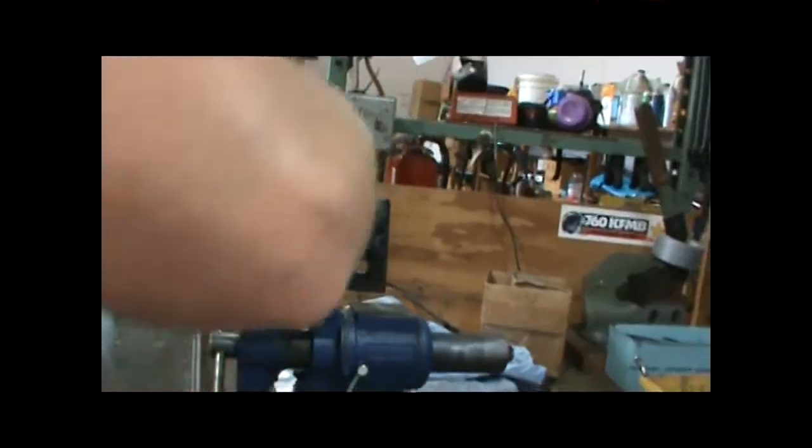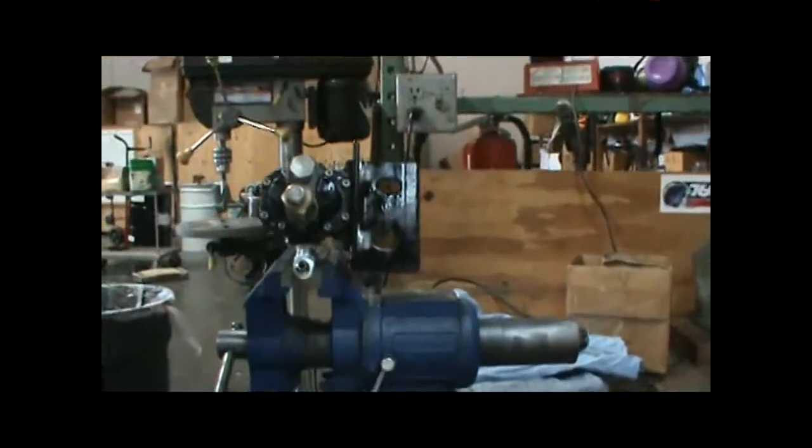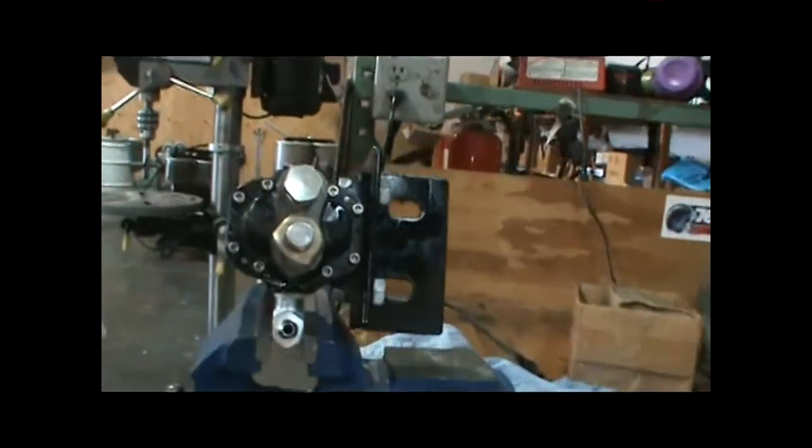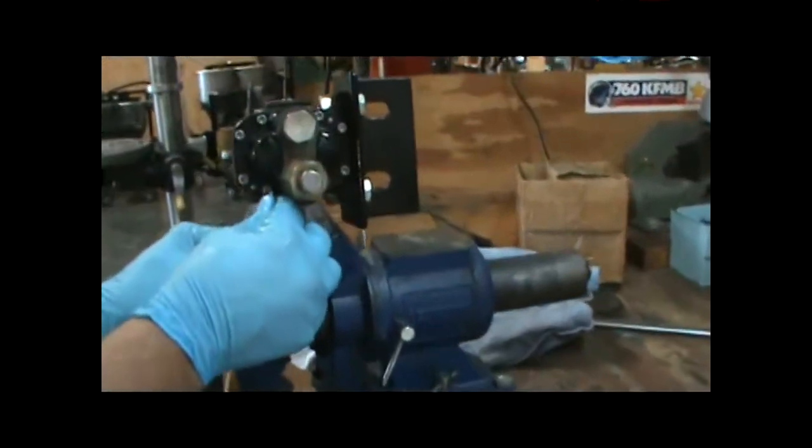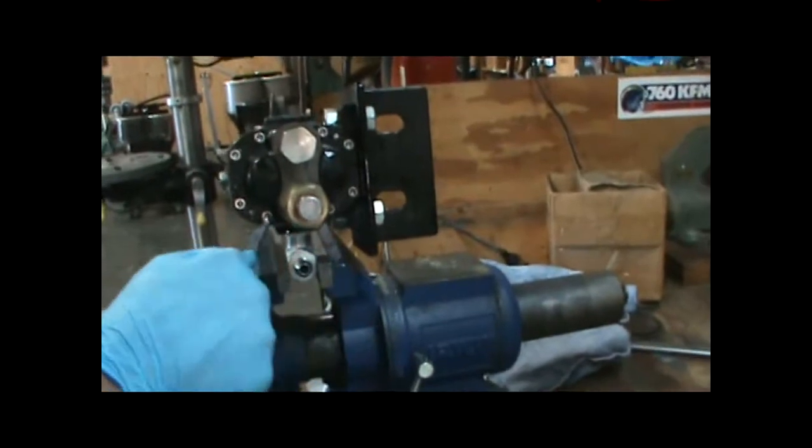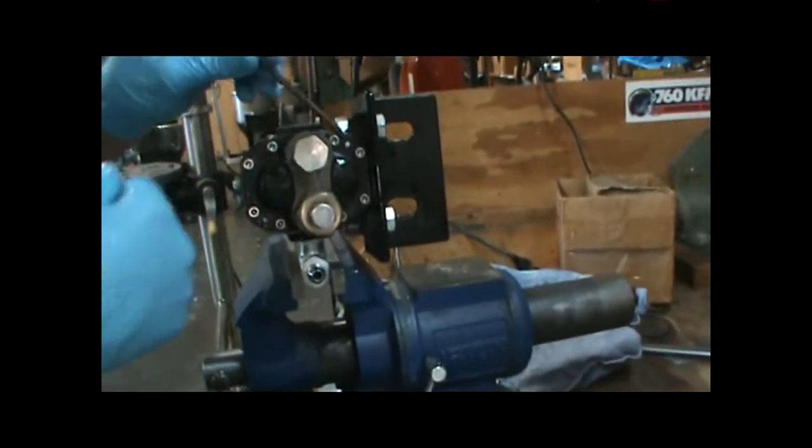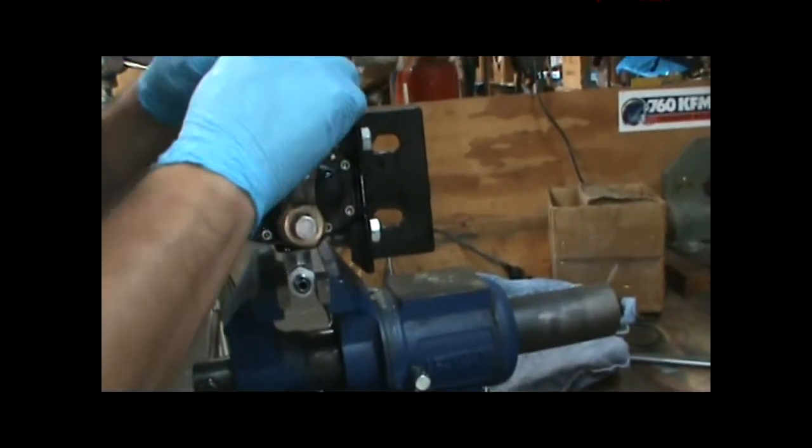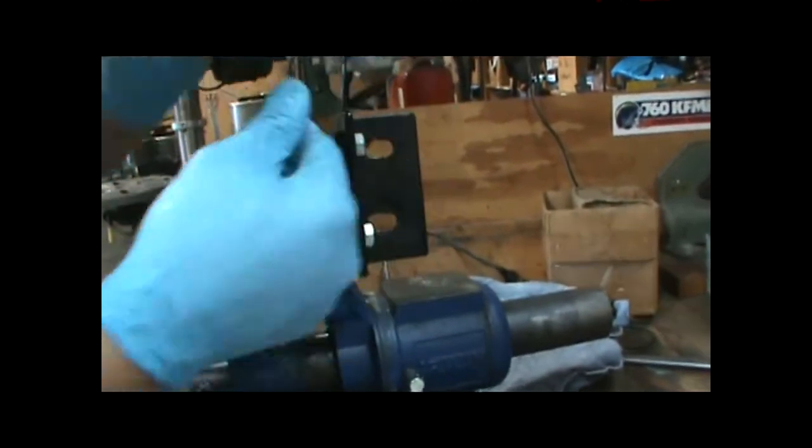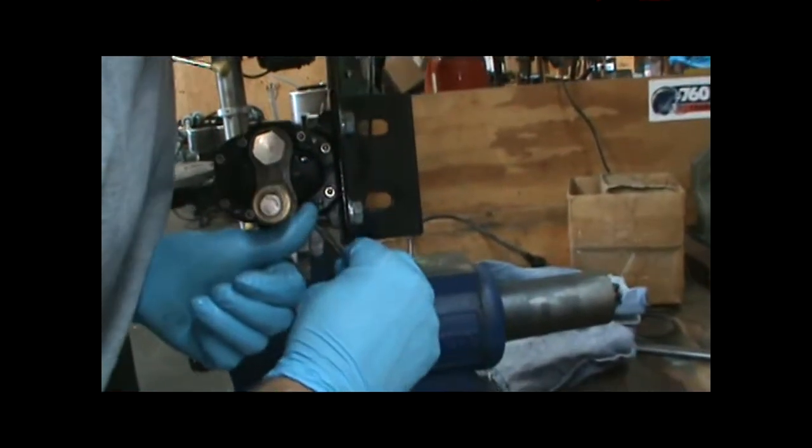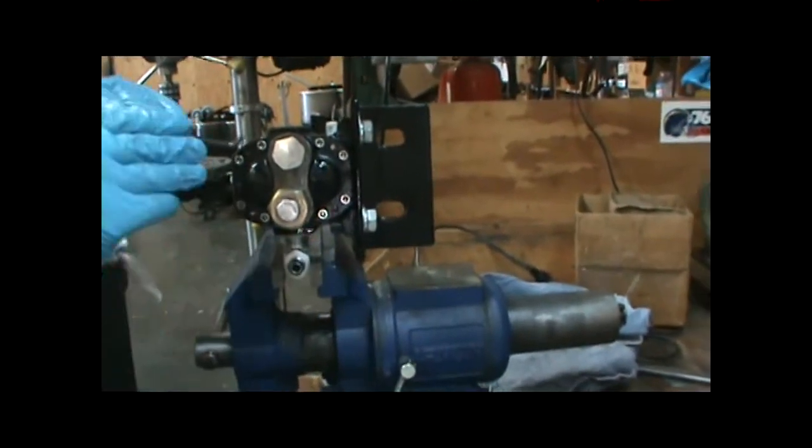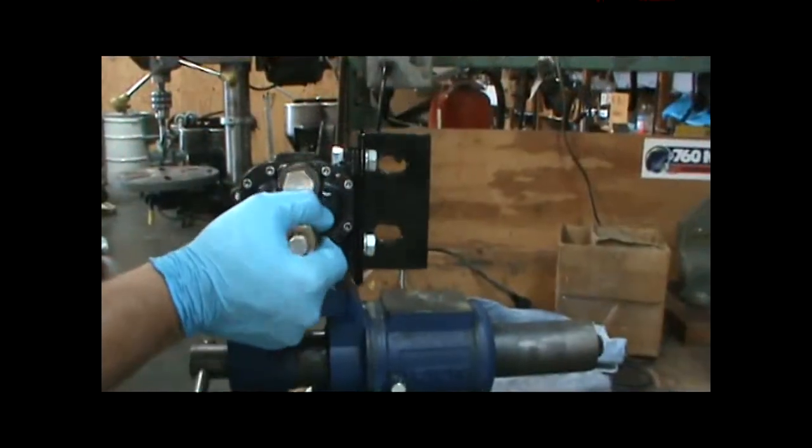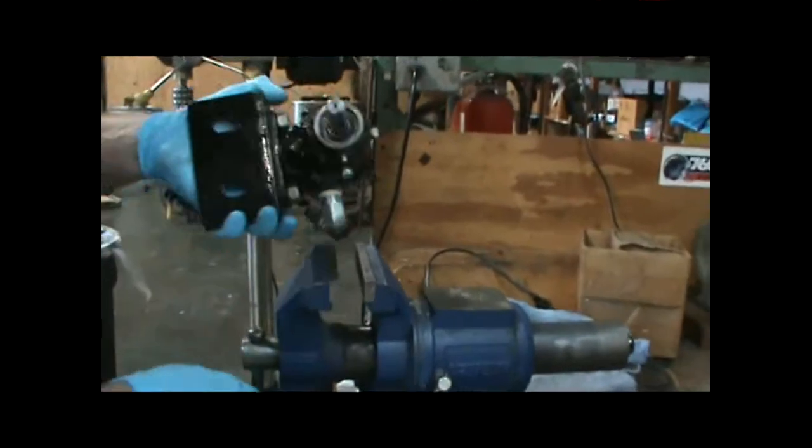After snugging up all of our eight allen bolts here, making sure you go in a star pattern, I'm gonna snug them up to about five pounds with the allen wrench. Go in a star pattern just like tightening up a tire on a car. You don't want to go around a circle, just use that star pattern to distribute the load. Pretty much ready to go here.